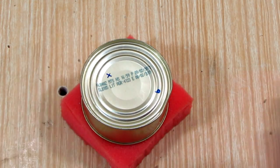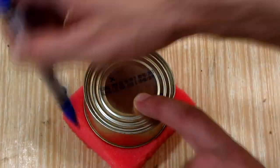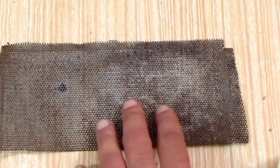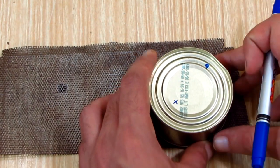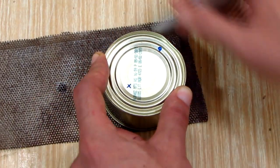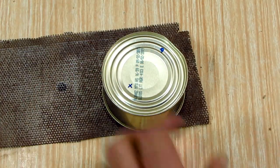I put the can on top of the sponge then outlined it. I did the same thing for the perforated sheet. I salvaged this piece of perforated metal from an old CRT TV that I took apart.